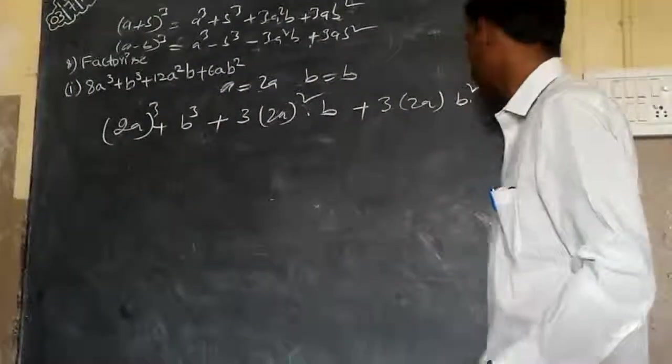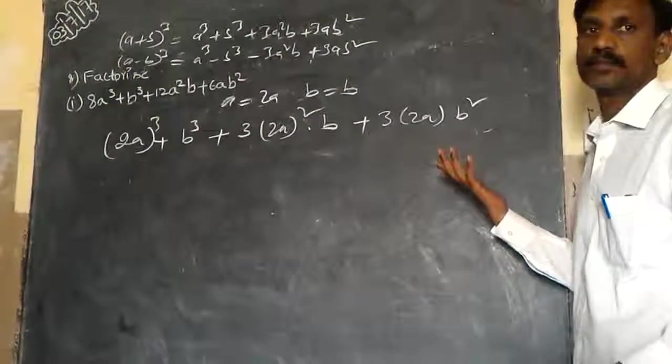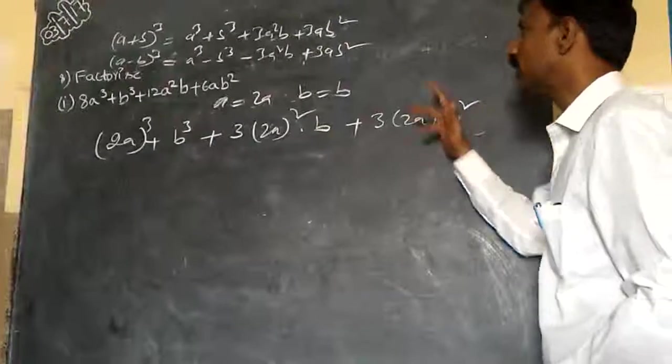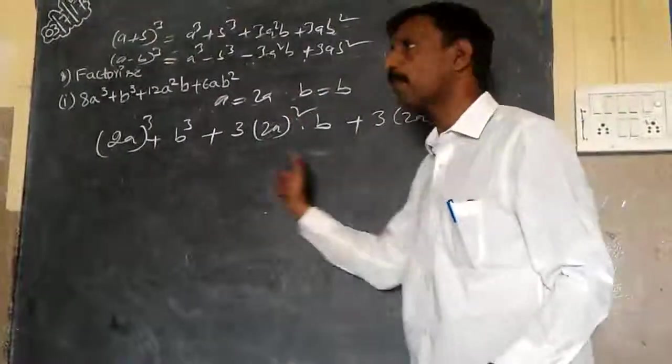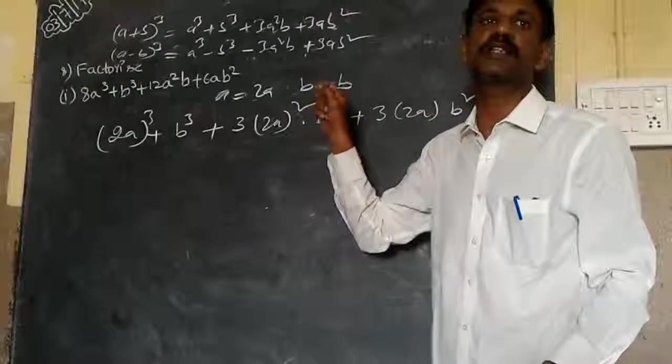6ab² means 2 times 3 is 6. 6ab². I got it or not? This is nothing but this only. But this is in the form of a³ + b³ + 3a²b + 3ab².